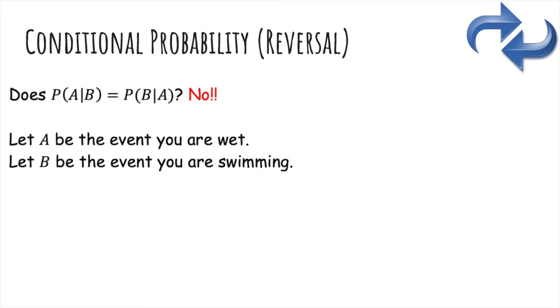For example, let A be the event you're wet and B be the event you're swimming. Then the probability of A given B is one, because if you're swimming, then you're definitely wet. But the probability of B given A is not one, because if you're wet, it doesn't mean you're swimming. You could be showering or something.